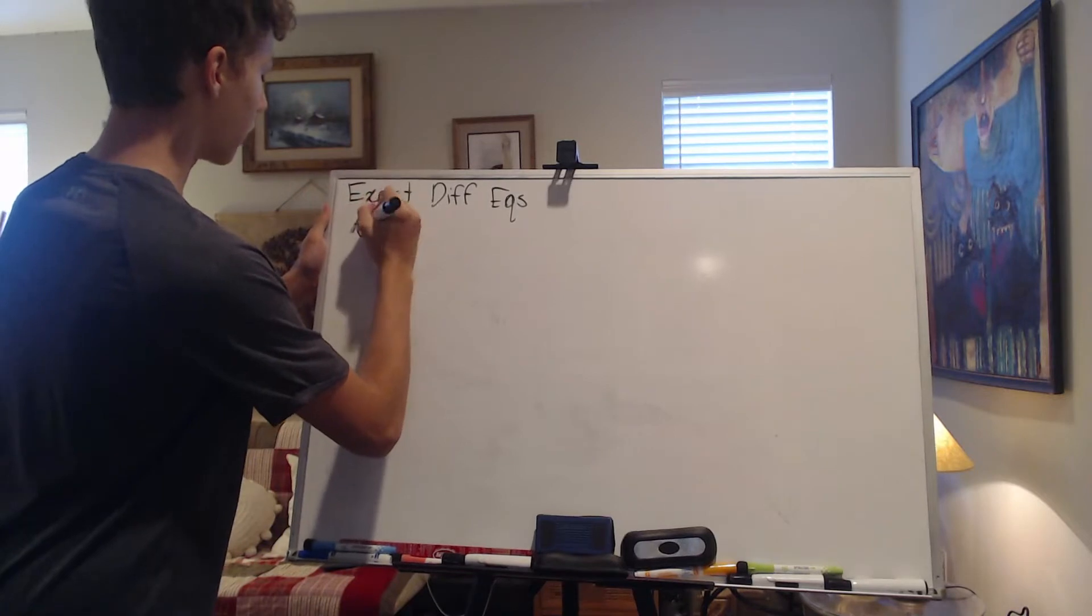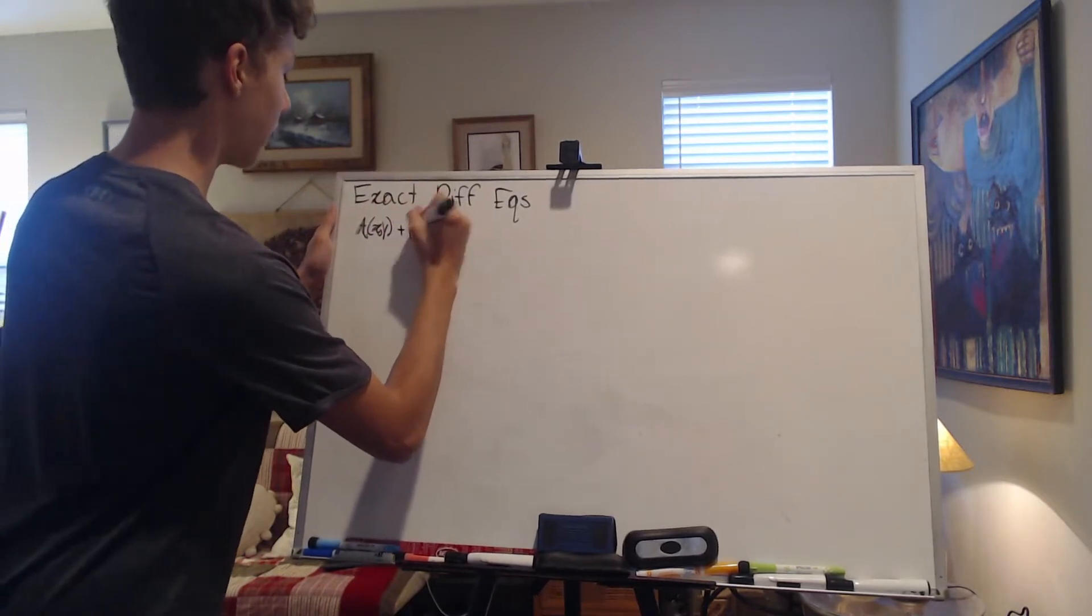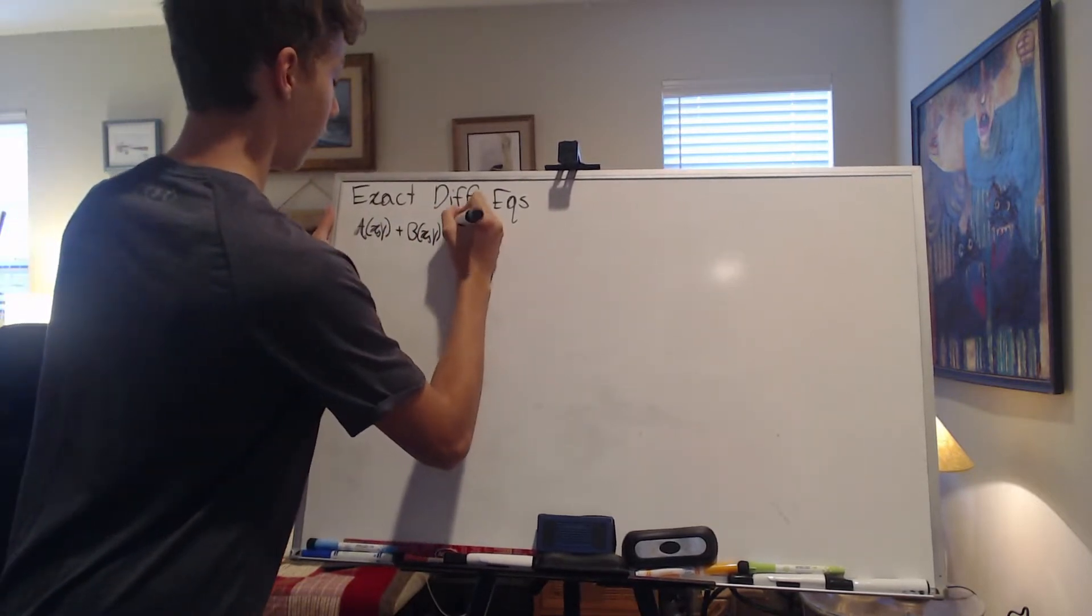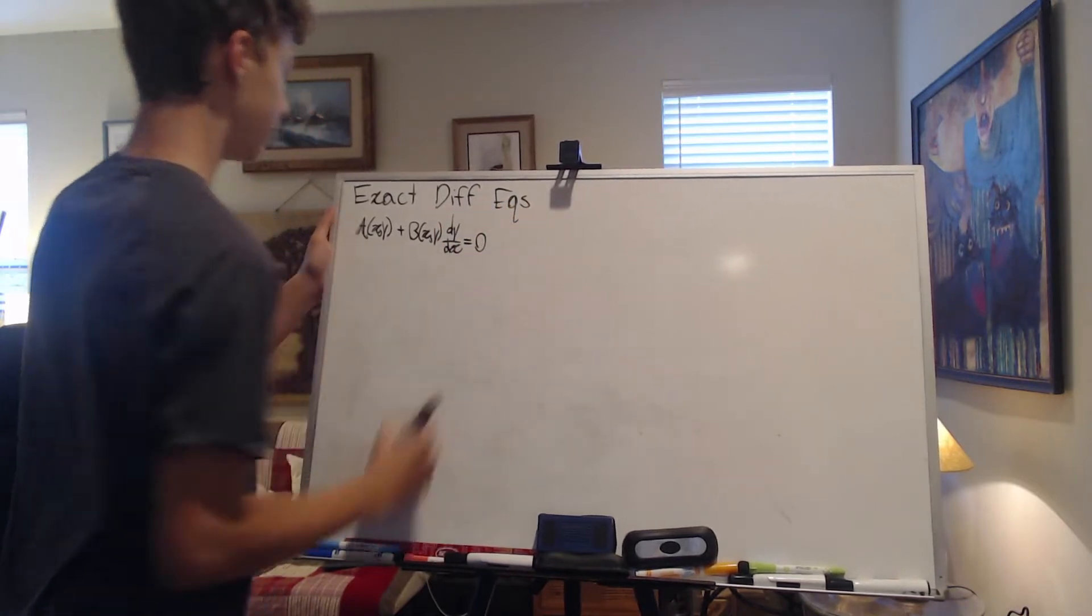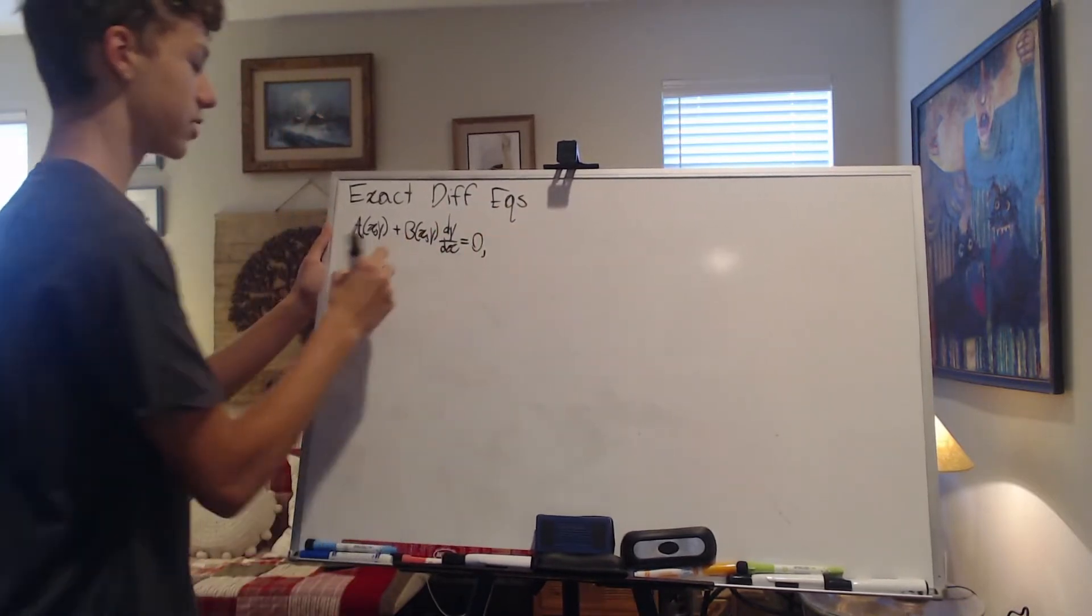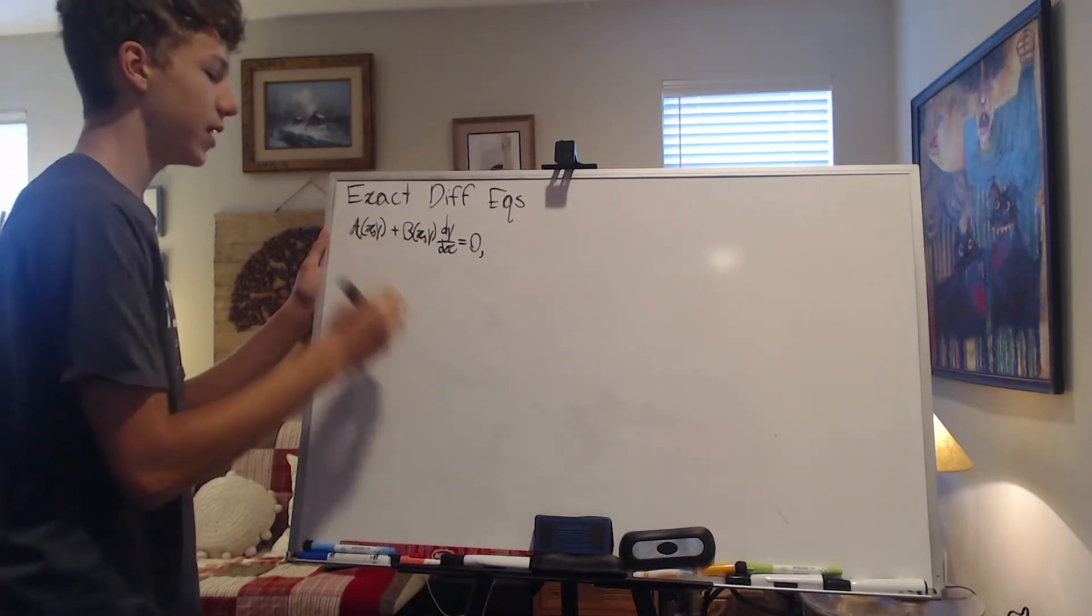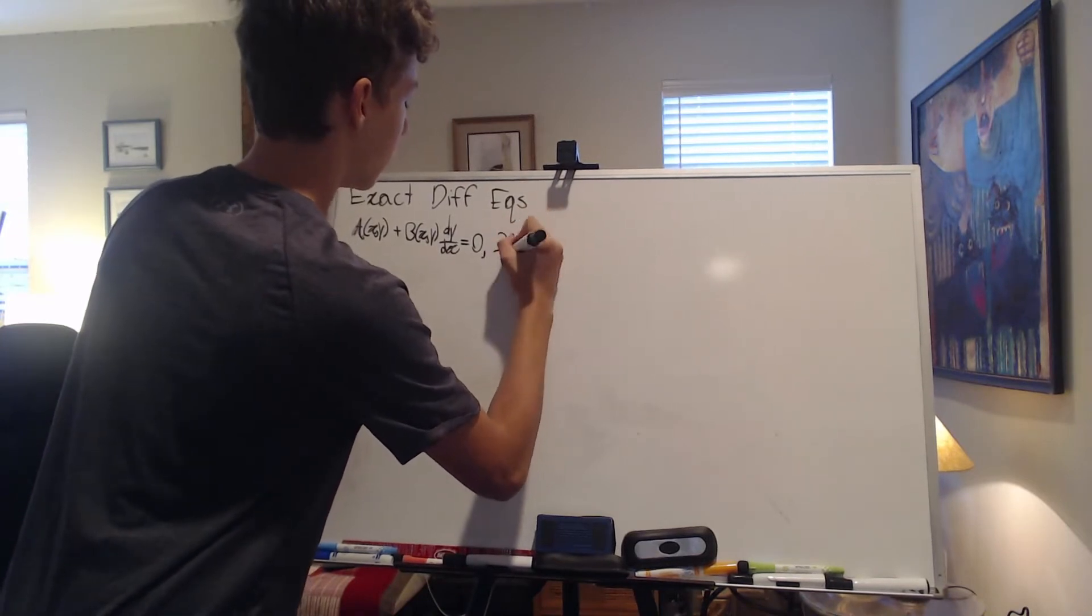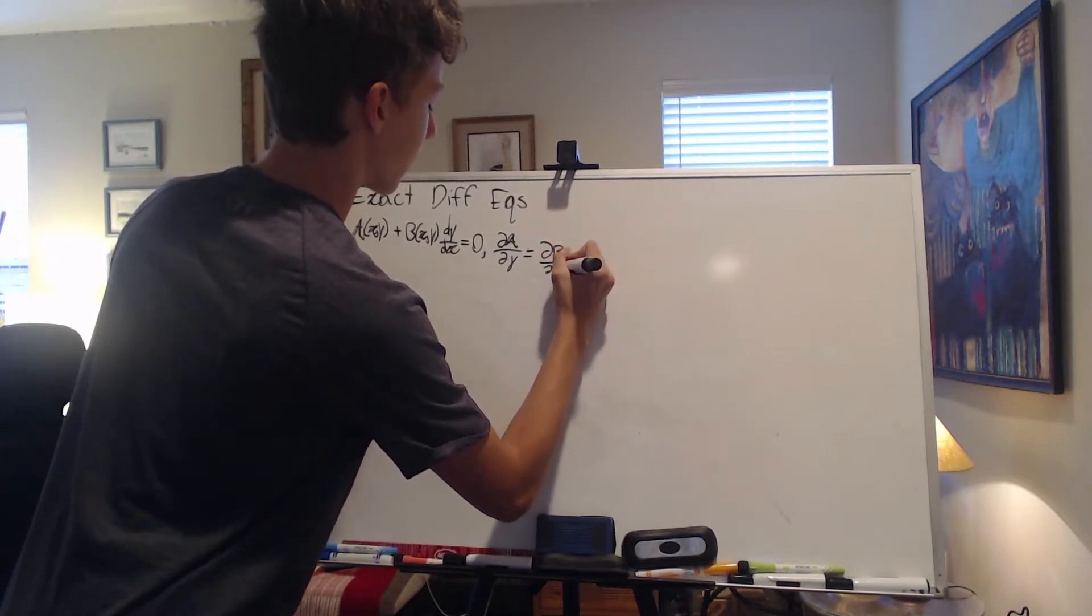So let's see, exact differential equations. So what are those? Those are differential equations of the form A(x,y) plus B(x,y) dy/dx, or y prime if you like, equal to zero. And there's a special property that is satisfied by these coefficients here, a and b. That is that the partial derivative of a with respect to y is equal to the partial derivative of b with respect to x.